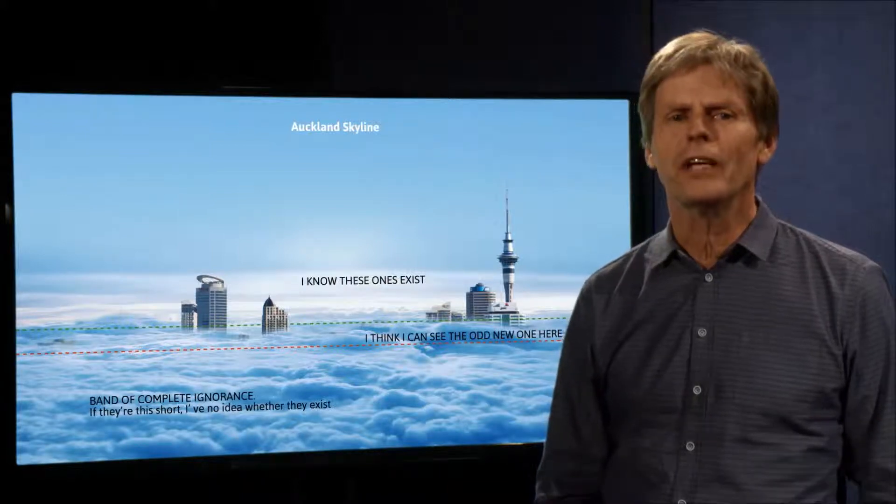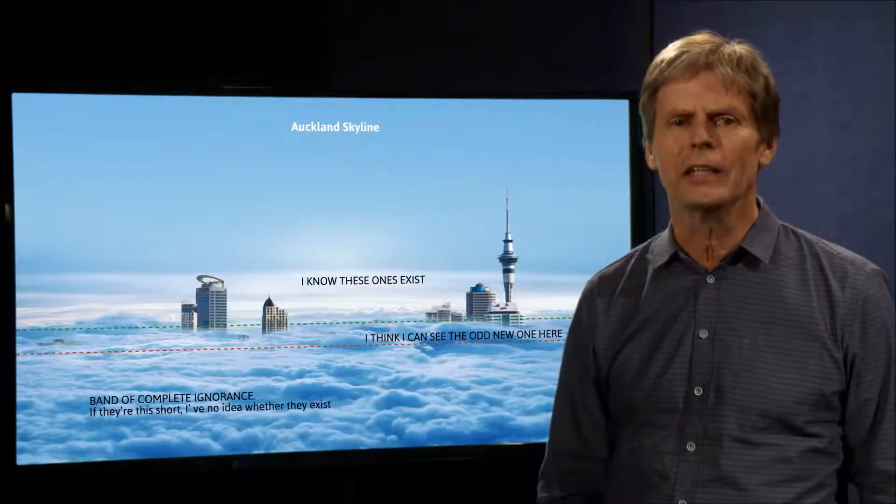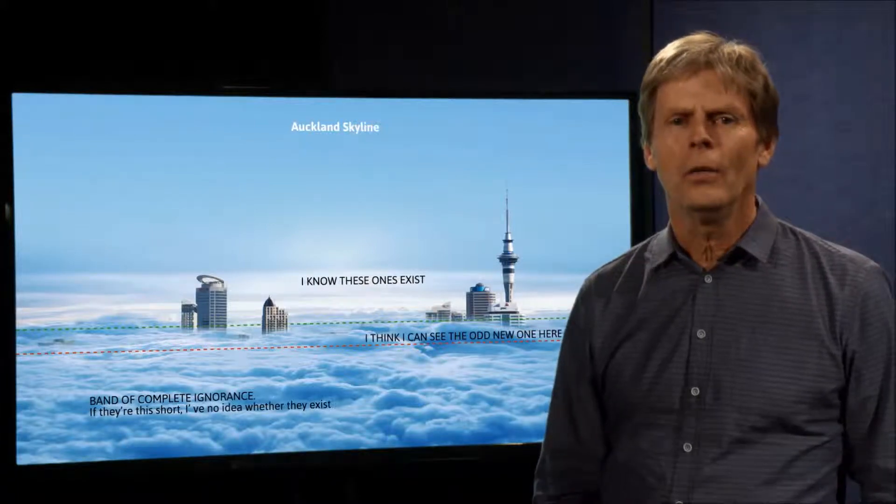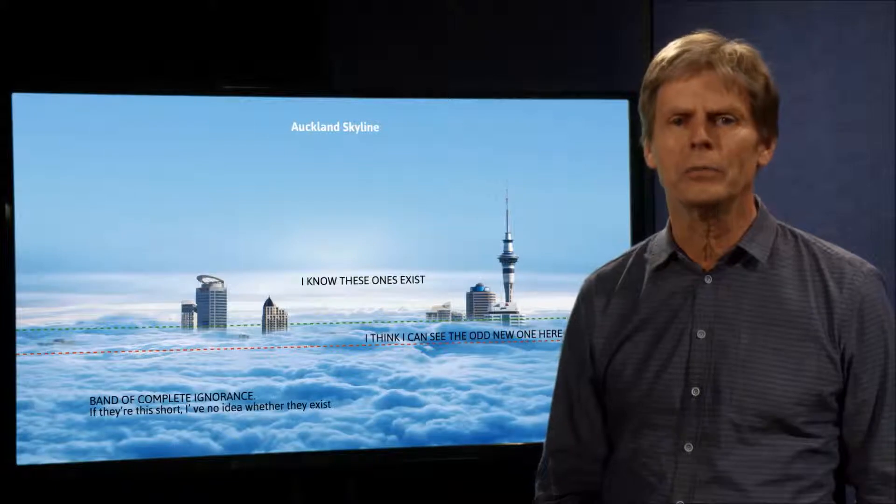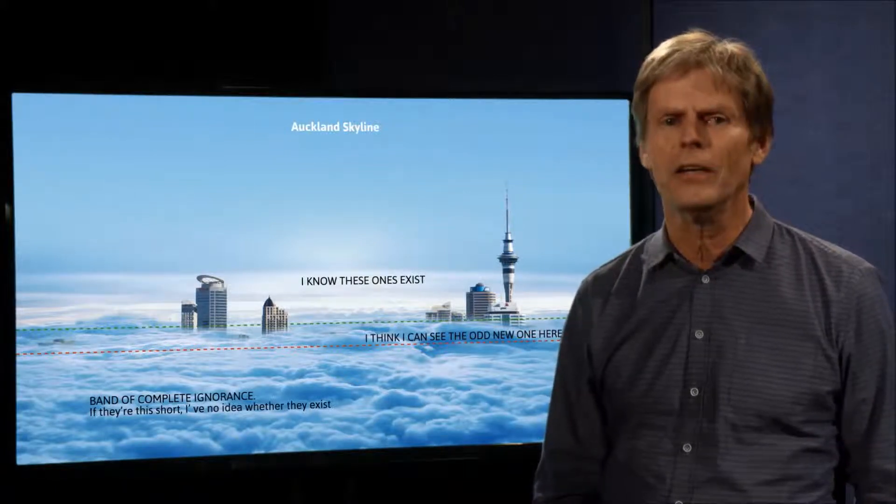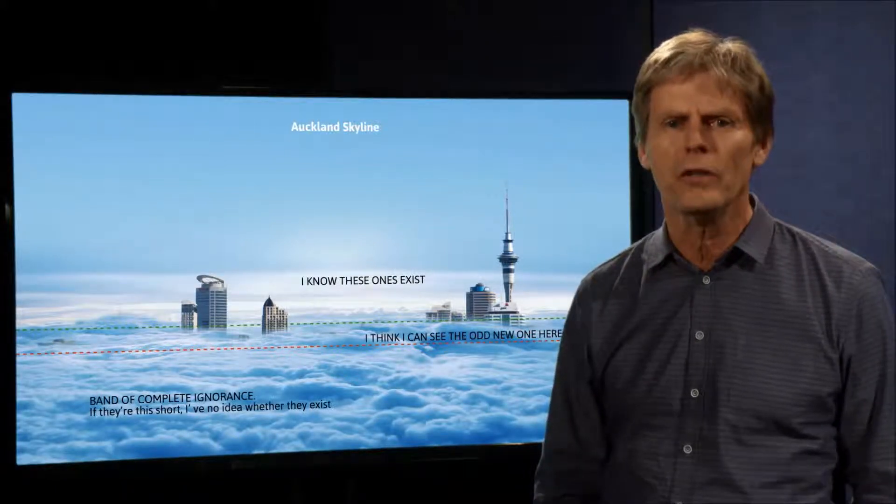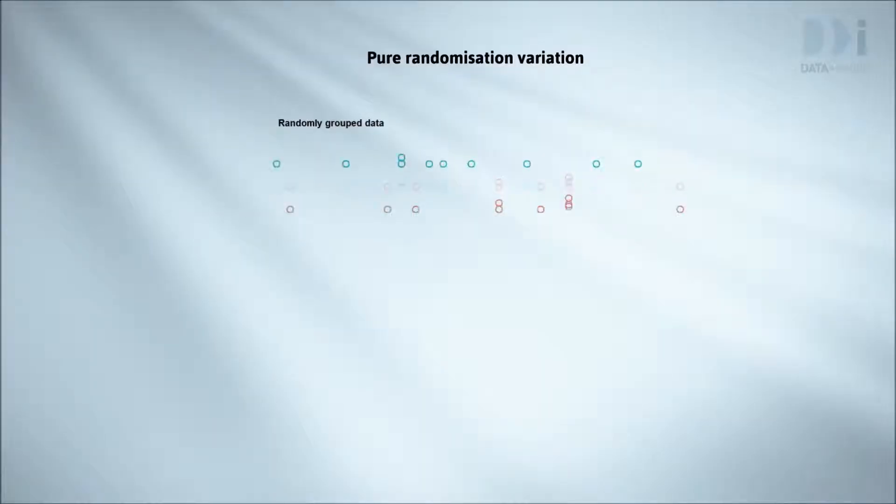Randomisation variation, sampling and uncontrolled natural variation are like the fog. We can't reliably determine whether a true difference between treatment groups exists unless that true difference is big enough to poke up through the fog. We'll now start developing this basic idea.